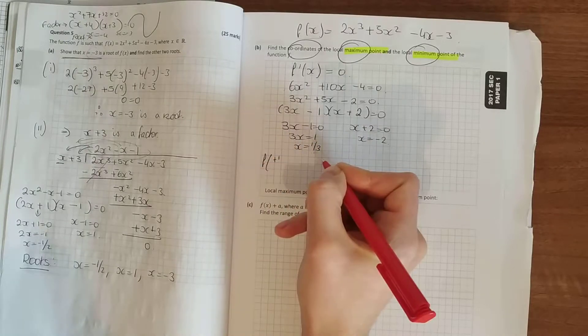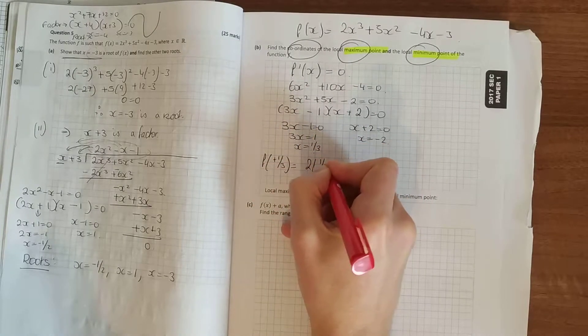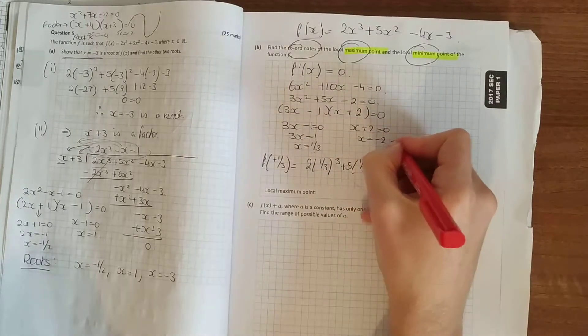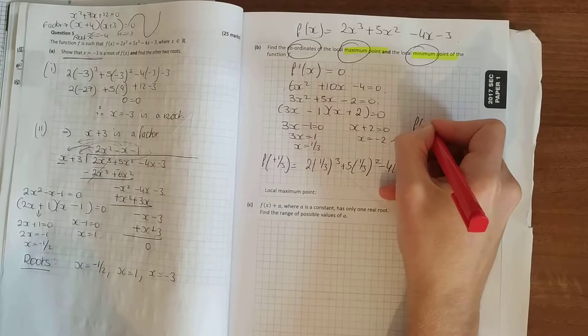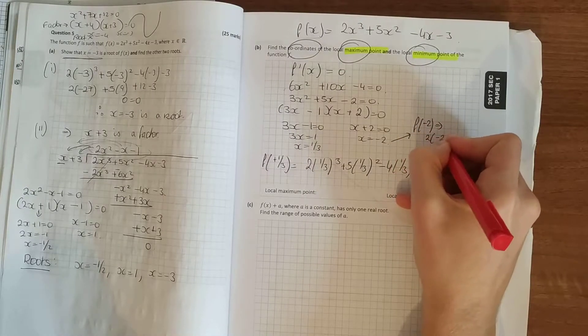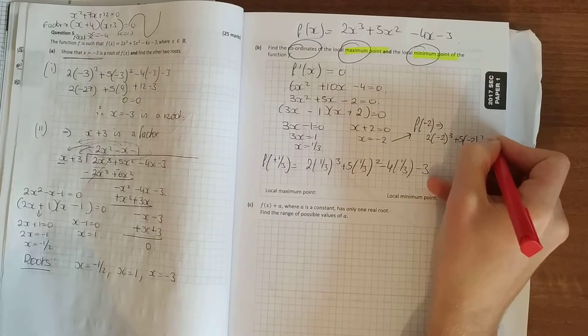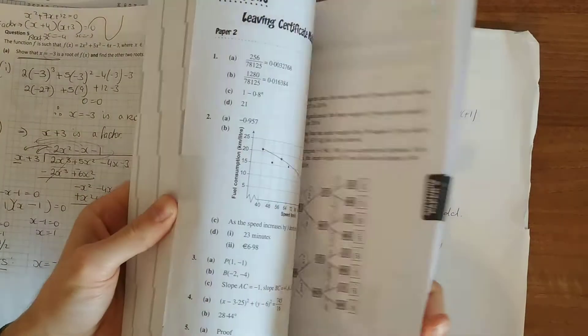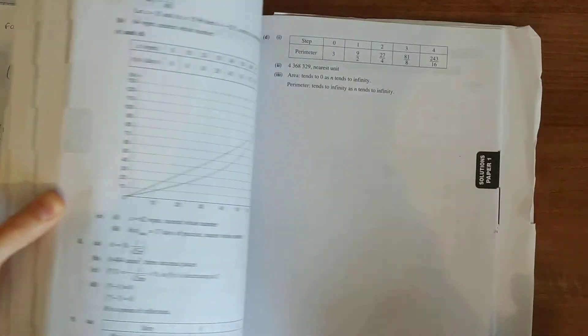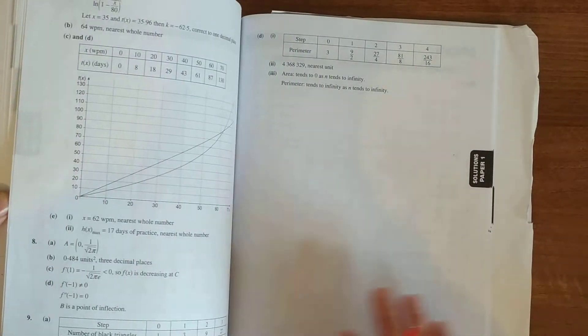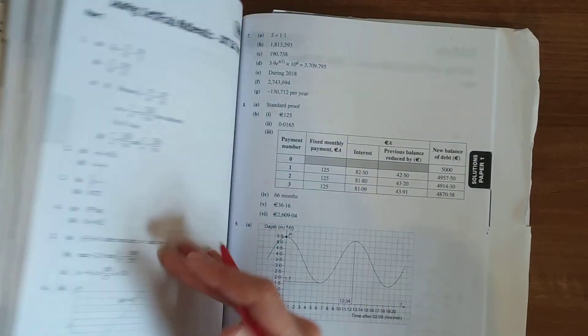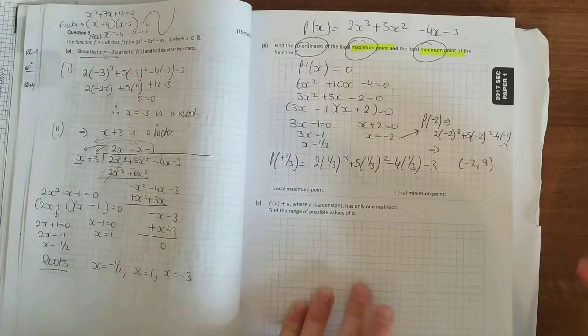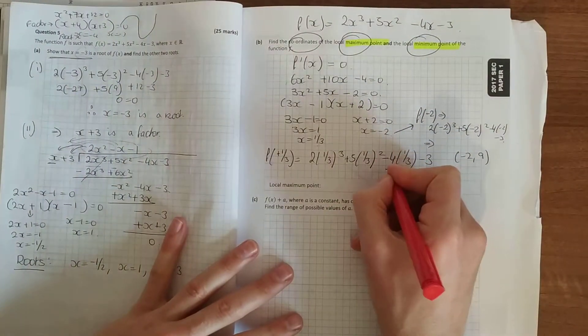So f of a third. You get a value there. For this one do the same. You get two answers. I'm just going to look at the back of the book here. Save a bit of time. Everyone knows how to put numbers in the calculator. And we see when we put in minus 2 we get 9. So minus 2, 9. And we put in a third we get a minus 100 over 27.